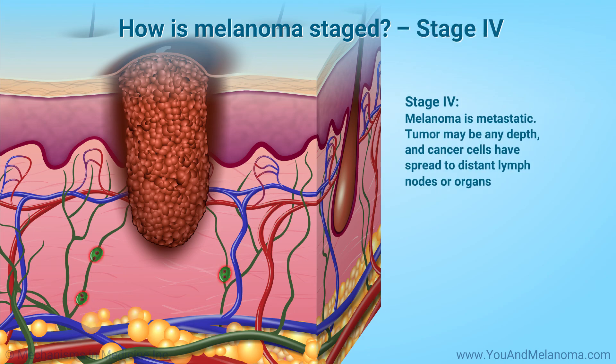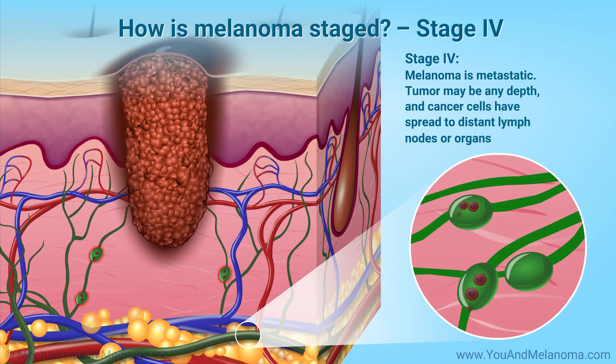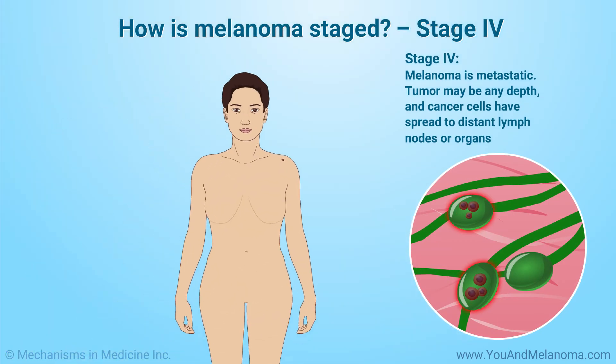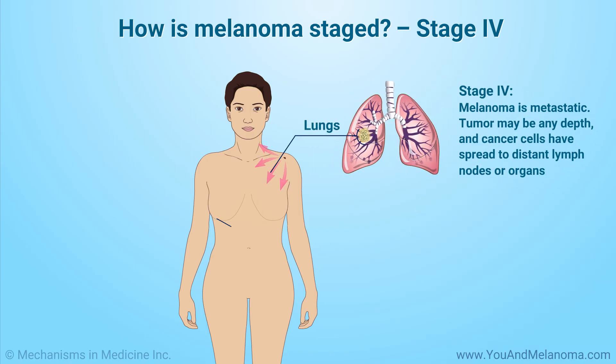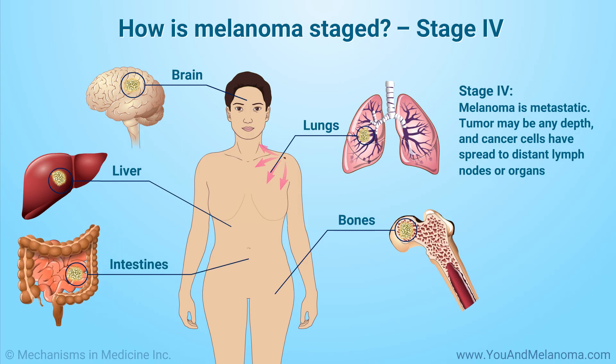Stage 3 melanoma may be any depth and the cancer cells have spread to nearby skin or lymph nodes. Stage 4 melanoma is metastatic. The tumor may be any depth and the cancer cells have spread to distant lymph nodes or organs, such as the lungs, liver, brain, bones, and intestines.